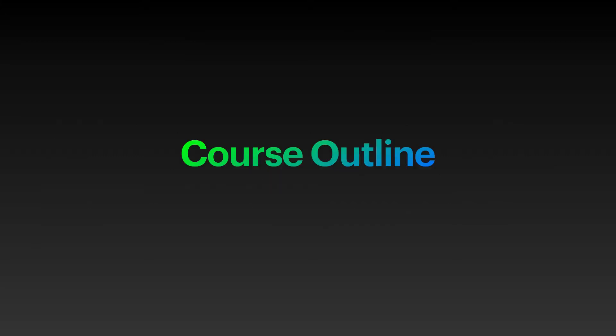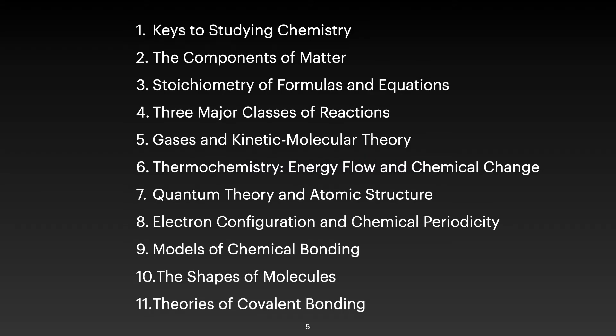In terms of the course content, the first part will discuss the general principles of chemistry and the components of matter. Then we have two to three chapters of physical chemistry, followed by general chemistry which involves quantum theory and atomic structure. We then discuss electronic configuration and chemical periodicity, and then we enter the concepts of bonding. The last three chapters involve bonding.